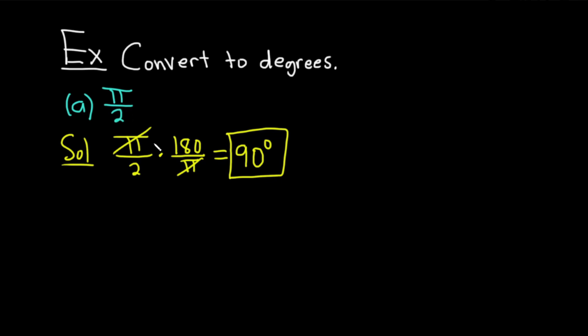Again, converting from radians to degrees, you just multiply by 180 over pi. Let's do one more. This one is a little bit harder, but it's not too bad. So, we have 7 pi over 6, and we want to convert it to degrees. Solution.